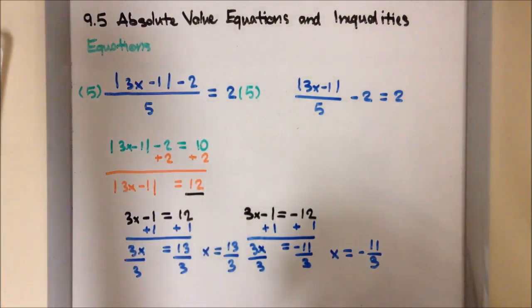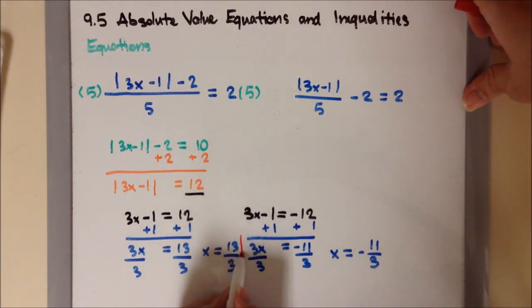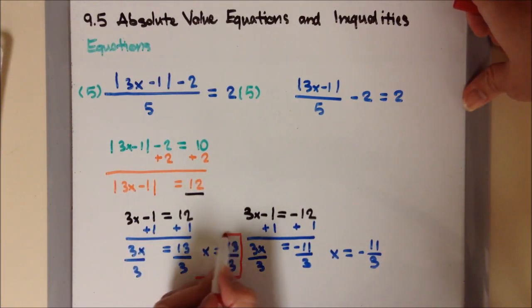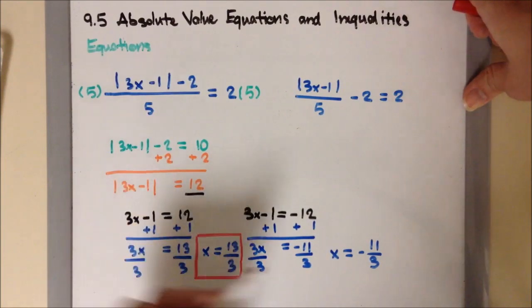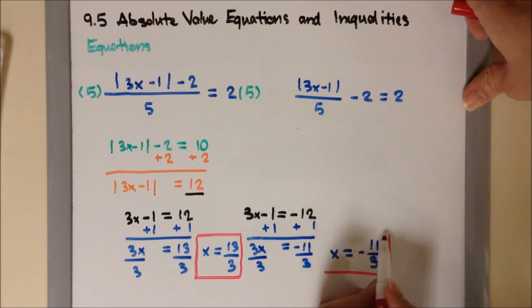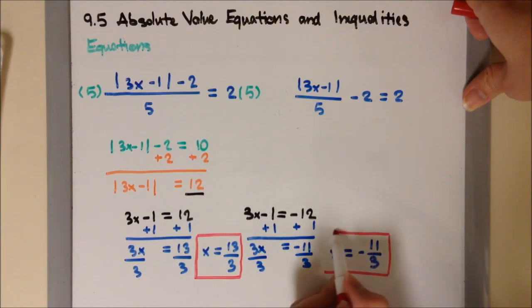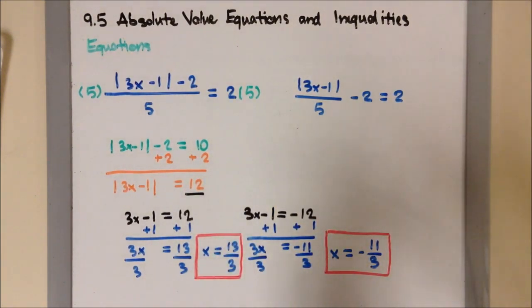So our final answers are x equals positive 13 over 3, and x equals negative 11 over 3. Here are our two final answers.